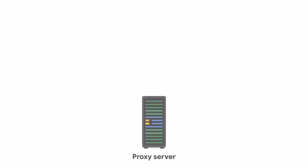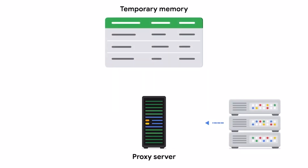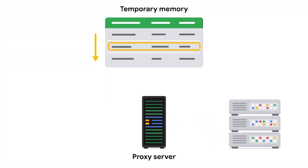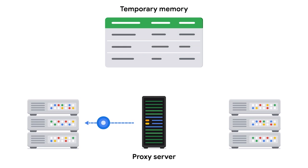A proxy server uses temporary memory to store data that's regularly requested by external servers. This way, it doesn't have to fetch data from an organization's internal servers every time. This enhances security by reducing contact with the internal server. There are different types of proxy servers that support network security.